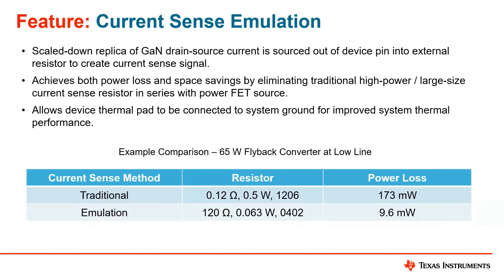One other key benefit here that isn't necessarily seen in the power loss performance is that having this built in means the device's low side thermal pad is able to directly connect to system ground, because you don't have to have that shunt resistor on the bottom side of your converter. This is going to help overall with system thermal performance, and we actually have some FLIR shots so you can see the thermal performance of our devices.